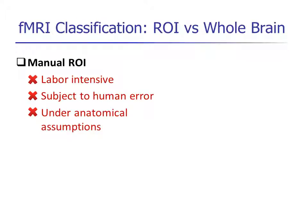fMRI classification is a very important topic in neuroscience. There are two approaches: ROI-based and whole brain-based.